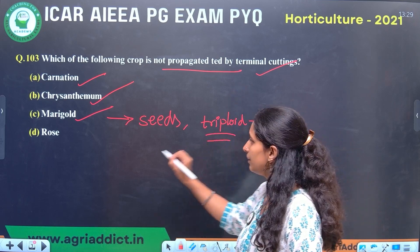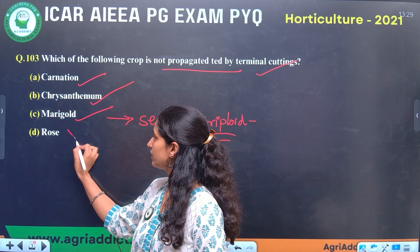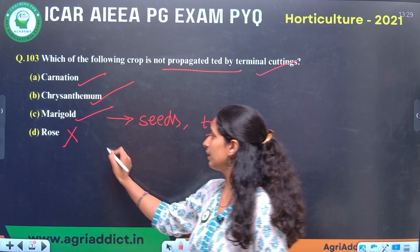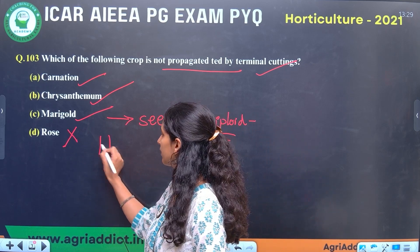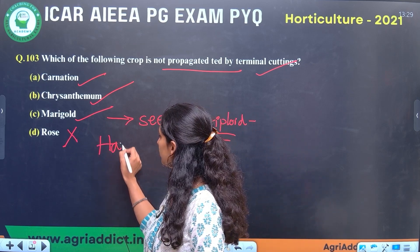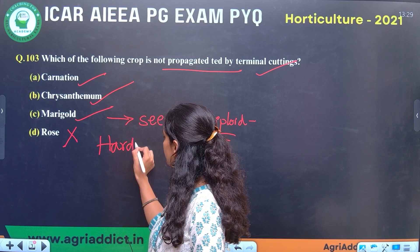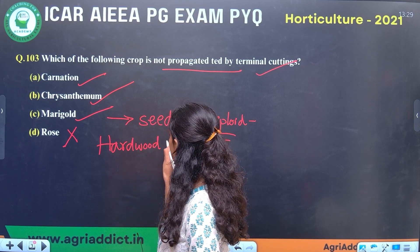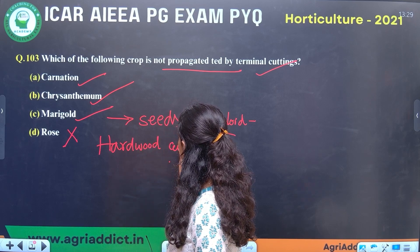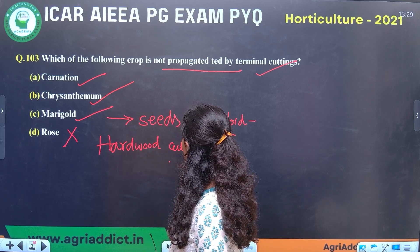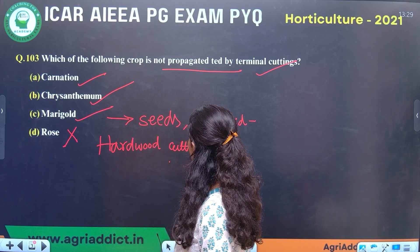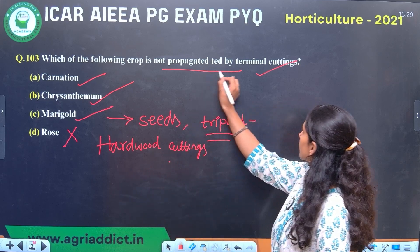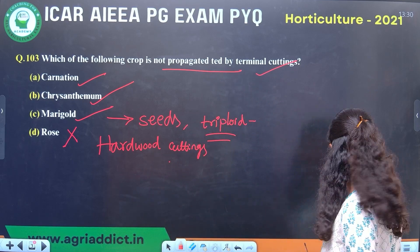Rose has a woody nature, so it is propagated by hardwood cuttings and T-budding, not by terminal cuttings.